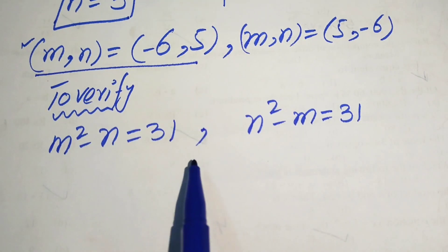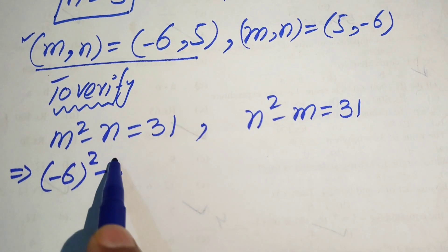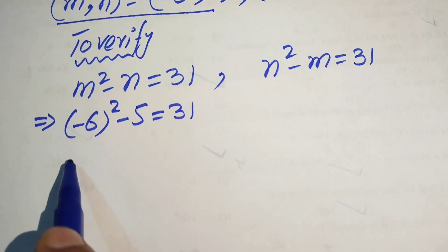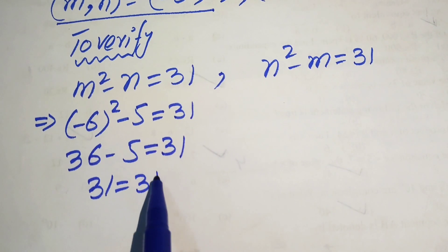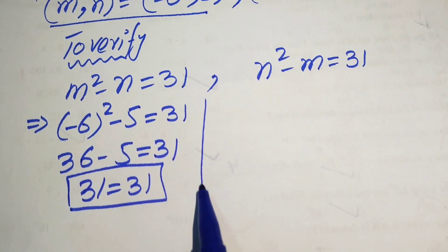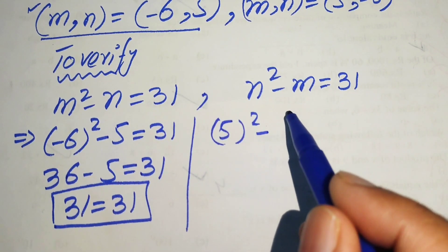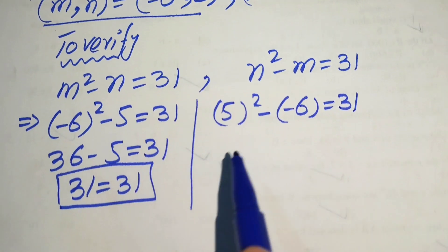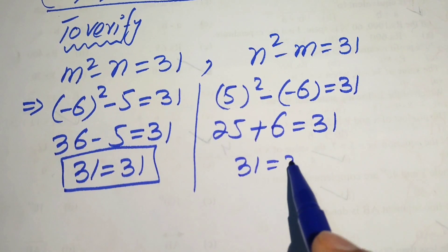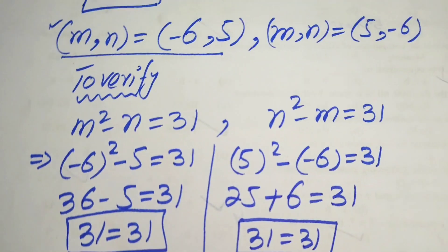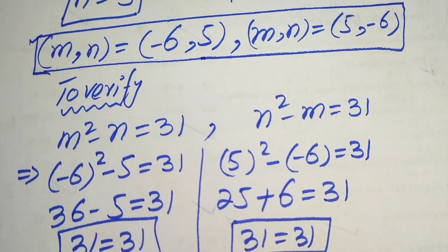Substituting the first solution into equation one: minus 6 squared minus 5 equals 36 minus 5 equals 31. Confirmed. Checking equation two: 5 squared minus minus 6 equals 25 plus 6 equals 31. Confirmed. The first solution satisfies both equations. These are the two solutions of the given problem. Thank you so much for watching this video.